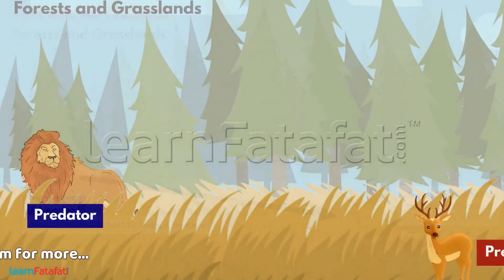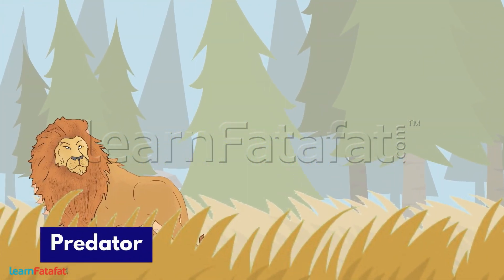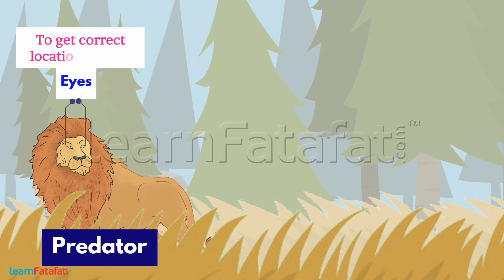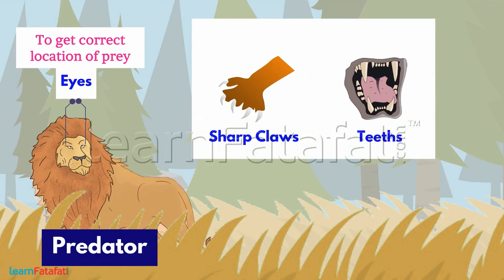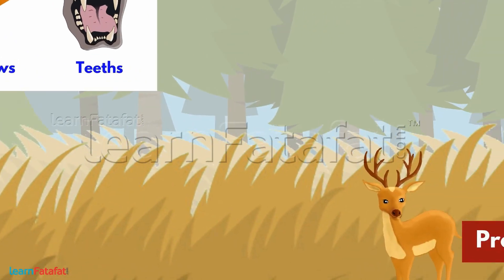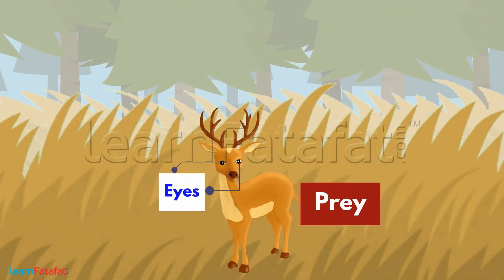The brown color of the lion helps it to hide in the brown grass. They have eyes at the front of the face to get the correct location of their prey. Sharp claws and teeth help them to catch their prey. The male lion has a mane which protects its neck.